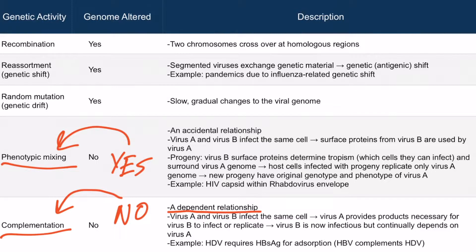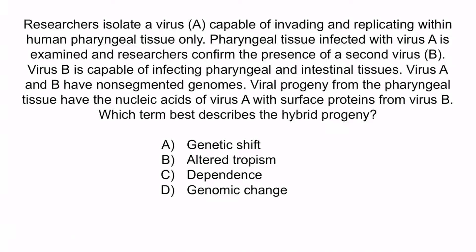Now let's do a practice question. Researchers isolate virus A, capable of invading and replicating within human pharyngeal tissue only. Pharyngeal tissue infected with virus A is examined and researchers confirm the presence of a second virus, virus B. Virus B is capable of infecting pharyngeal and intestinal tissues. Virus A and B have non-segmented genomes. Viral progeny from the pharyngeal tissue have the nucleic acids of virus A with surface proteins from virus B. Which term best describes the hybrid progeny? A, genetic shift. B, altered tropism. C, dependence. D, genomic change.